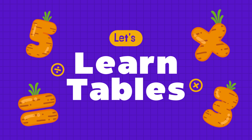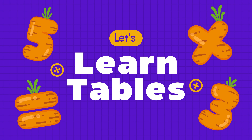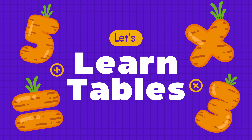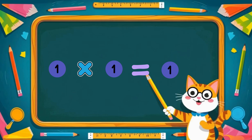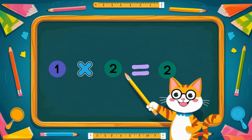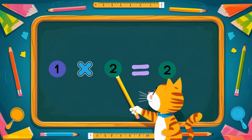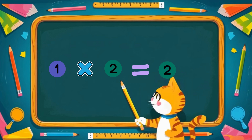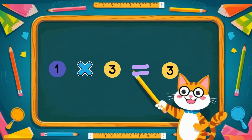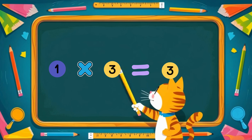Let's learn the table of one. It's the easiest one. 1 times 1 is 1. 1 times 2 is 2. 1 times 3 is 3.